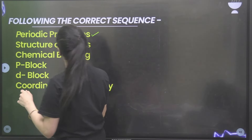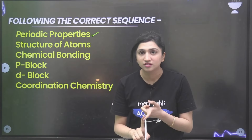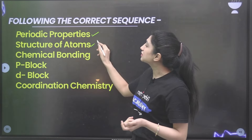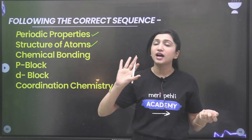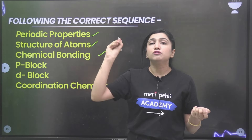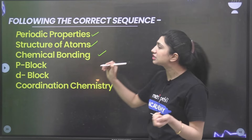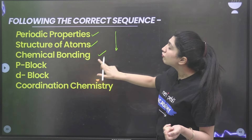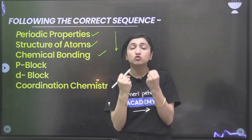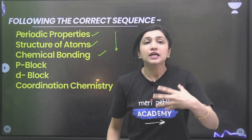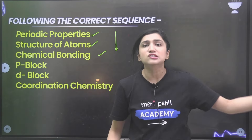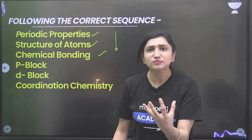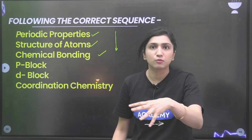First of all, start with periodic properties, which is in class 11. Then after that, atomic structure, and then chemical bonding. You have to follow only this sequence — periodic properties, then atomic structure, followed by chemical bonding. Because these units lay down a strong foundation which will help you; the rest of the chapters will be easier and you will be able to understand them without feeling overwhelmed.